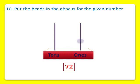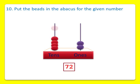Let's start. One, two — two ones. And seven beads in ten's: one, two, three, four, five, six, seven. So seven ten's and two ones make 72. We have shown 72 on the abacus.